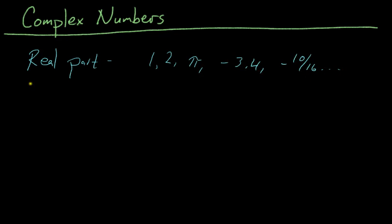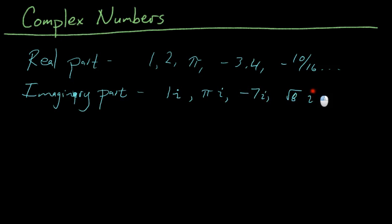Just a regular number. It also has an imaginary part, which is just a regular number but times i. So 1i, pi i, negative 7i, square root of 8i, whatever. So where i is what we call the square root of negative 1.